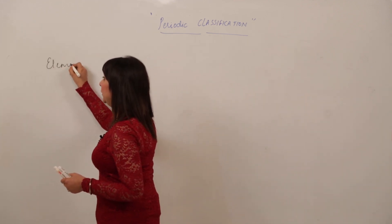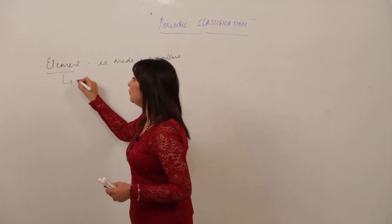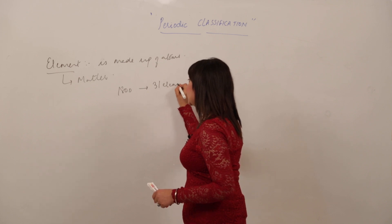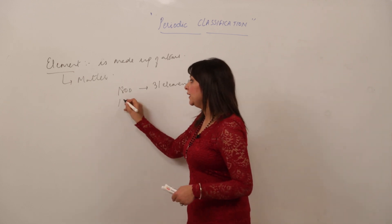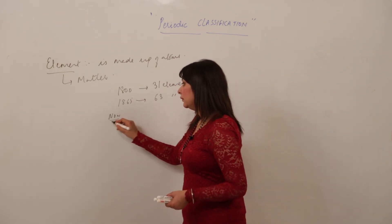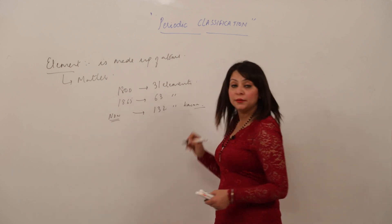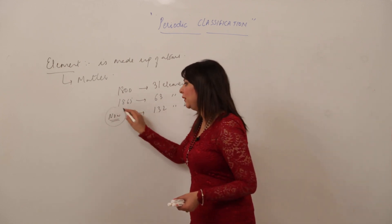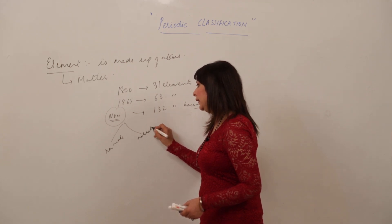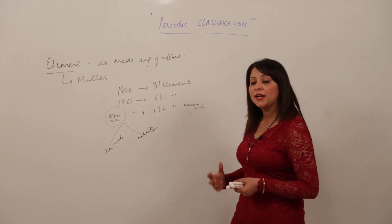The element is made up of atoms and is a building block of matter. Around the year 1800, approximately 31 elements were found. With the passage of time, around 1865, this went to 63 elements. Nowadays approximately 132 elements are known, and still more discoveries are in the pipeline. These elements are of two types: man-made synthetic elements and naturally occurring elements.